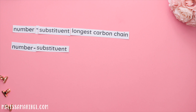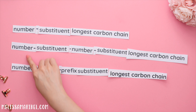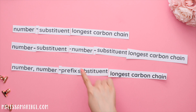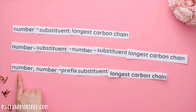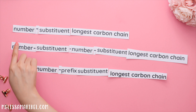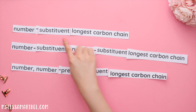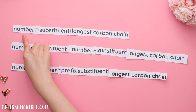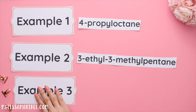Here is the format of each example name we will go over. Notice how in each example we always have a number in front of our substituent followed by the longest carbon chain. That number tells us which carbon that specific substituent is located at. We'll always start with drawing the longest carbon chain first, then placing the substituents at the correct locations. Let's do three different examples that increase in difficulty.